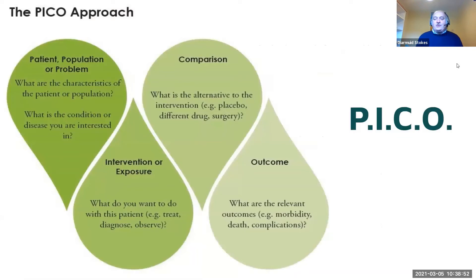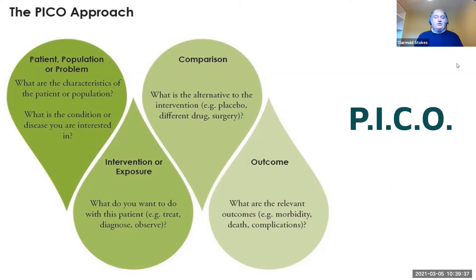Systematic reviews started initially in the health field and spread to social sciences. PICO is probably the most popular or best-known framework. PICO stands for Patient, Intervention, Comparison, and Outcome. When you look at your research question: what are the characteristics of the patient or population, or what is the condition or disease you're interested in, e.g. cancer patients? What's the intervention or exposure - do you want to treat, diagnose, or observe, e.g. chemotherapy? What's the alternative to the intervention, e.g. radiotherapy? And what is the outcome - death, complications, quality of life, etc.?